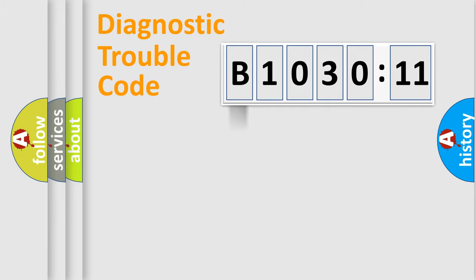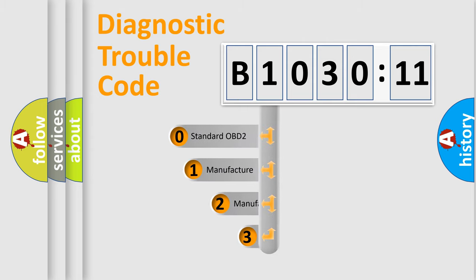Powertrain, body, chassis, network. This distribution is defined in the first character code.